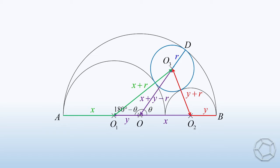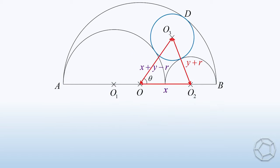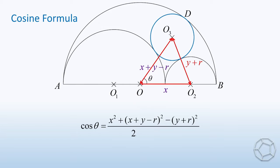So, what's the relation between the lengths and the angles? Let's look at this red triangle. Because we have three sides and one angle, we apply the cosine formula. Here, cosine theta is equal to X squared plus (X + Y - R)² minus (Y + R)² all divided by 2X(X + Y - R).